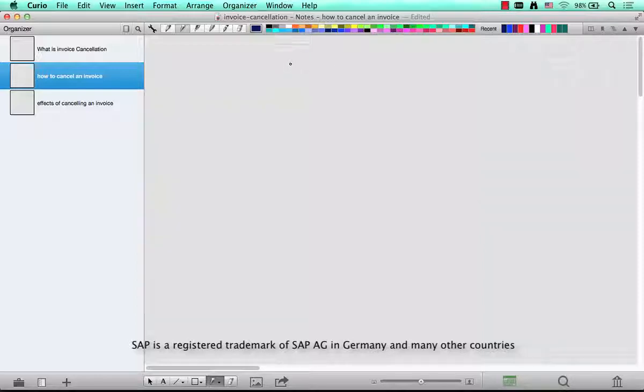You'll see that every invoice type, at least the standard invoice types like F2, G2 which is the credit memo, L2 which is the debit memo, and so on. They all have what is called a cancellation invoice type.